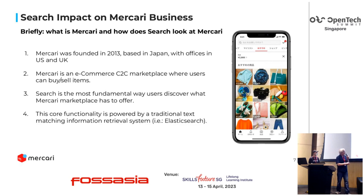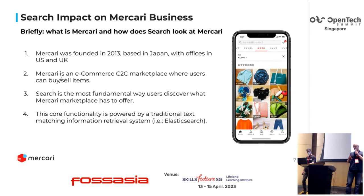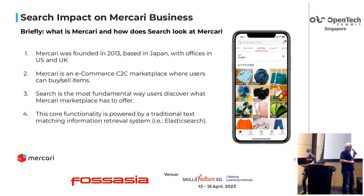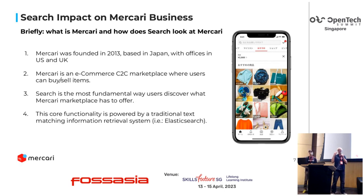You can see here more or less how the application looks now. Sorry, it is all in Japanese because it's only the Japanese market. There is a Mercari US application that is a bit different. The main way to interact with the application is via search — you're searching for stuff. I often buy things for my daughter, like ski boots, items that have been used once or twice. This core functionality is provided by Elasticsearch, another open source project. Elasticsearch provides an excellent way to do document retrieval — that is the basic use.